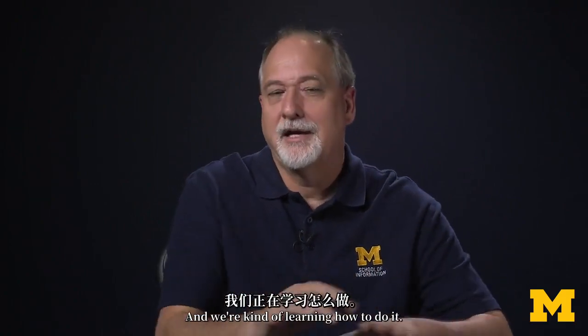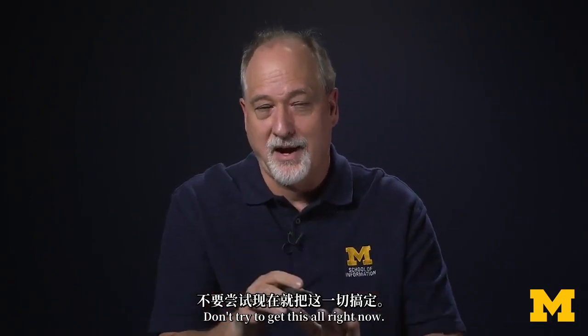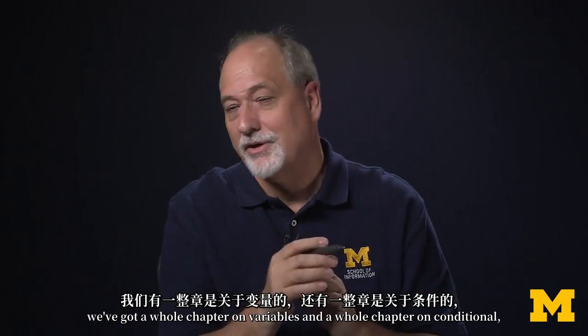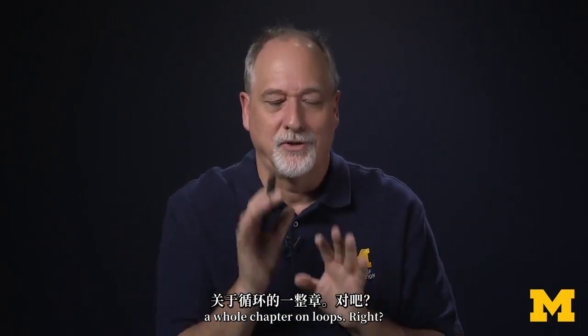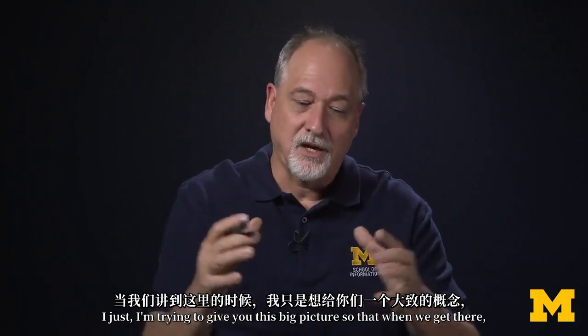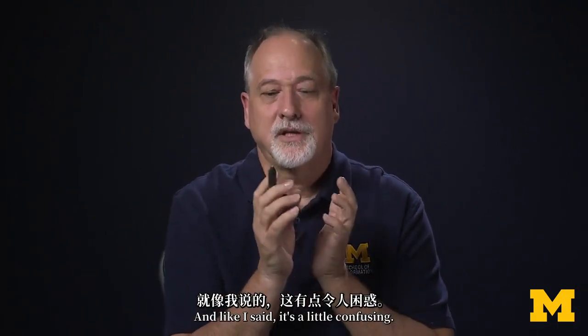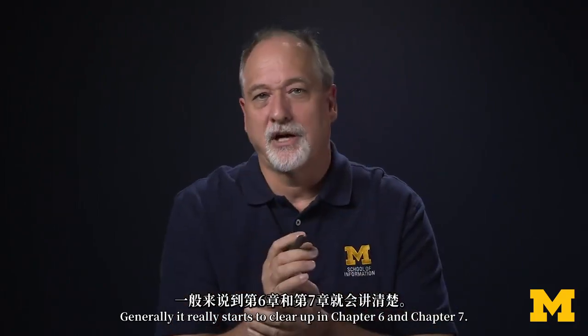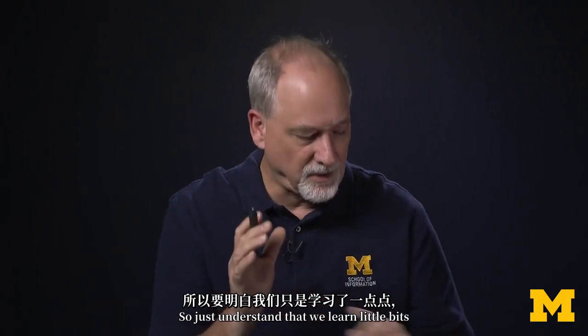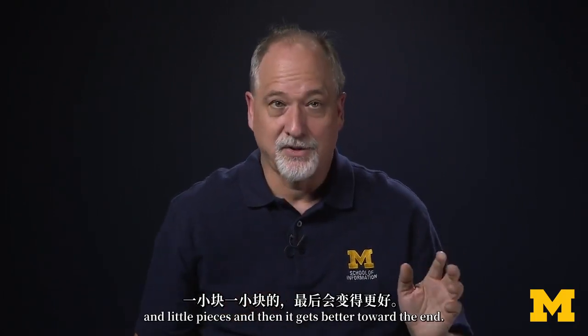We're kind of learning how to do it. Don't try to get this all right now. We're going to touch on this. We got a whole chapter on variables and a whole chapter on conditional, a whole chapter on loops. I just am trying to give you this big picture so that when we get there you can start putting those things together. It's a little confusing. Generally, it really starts to clear up in chapter six and chapter seven.